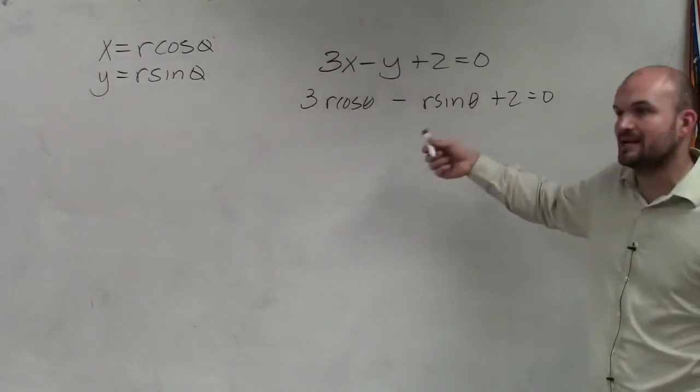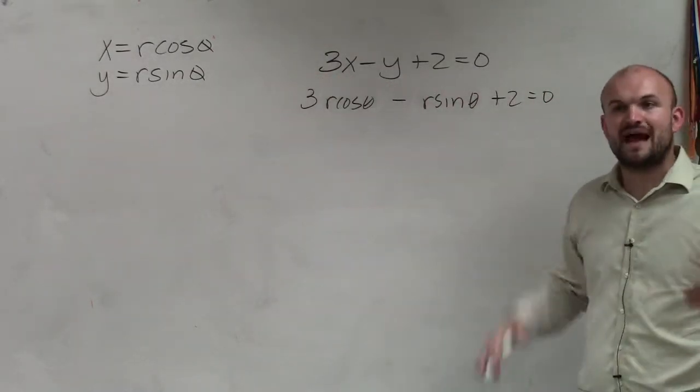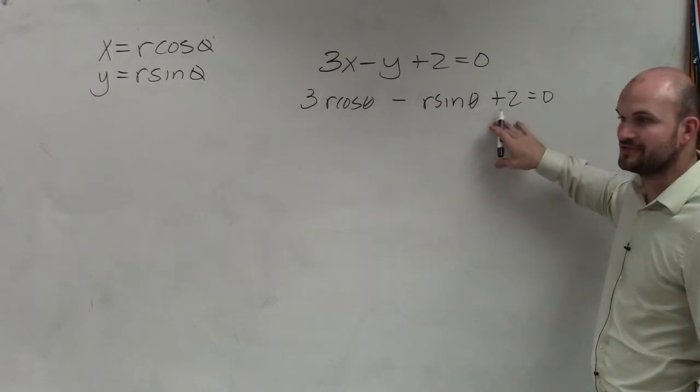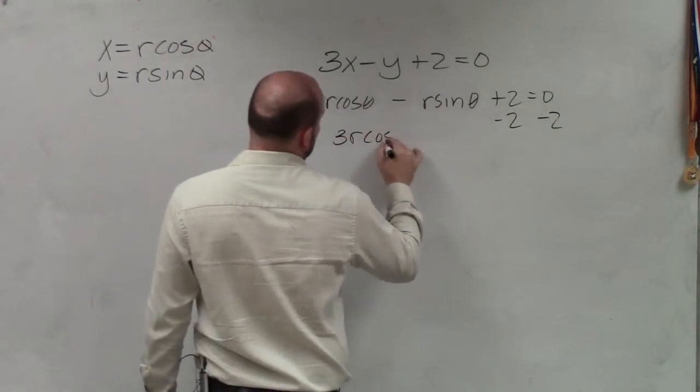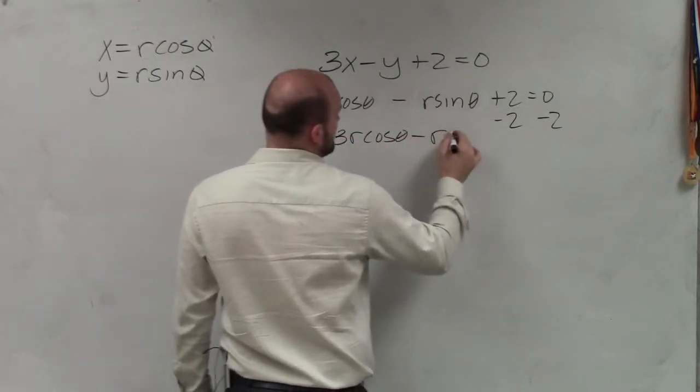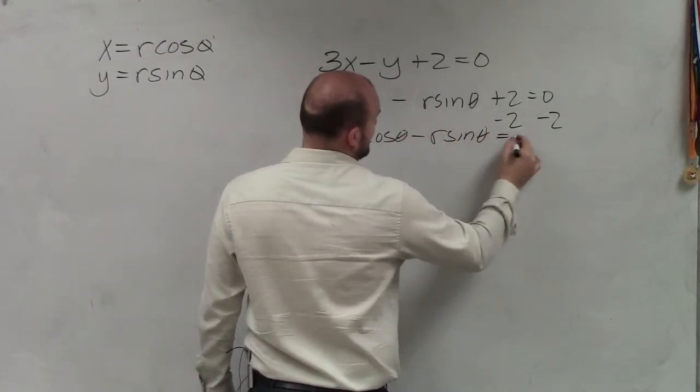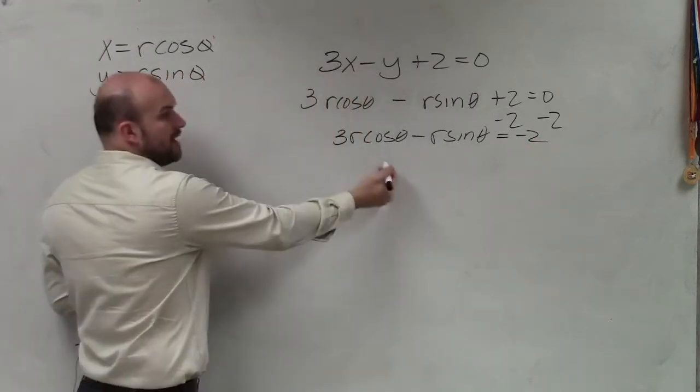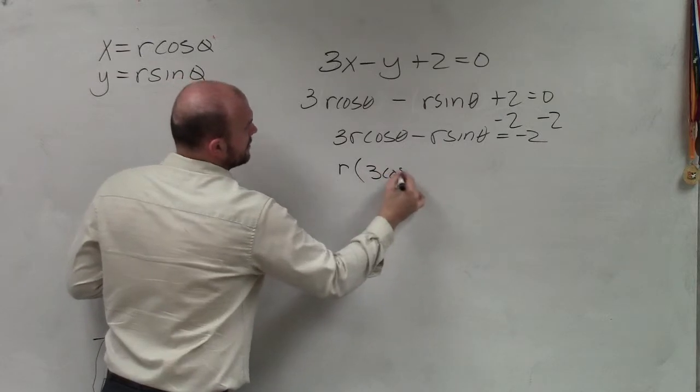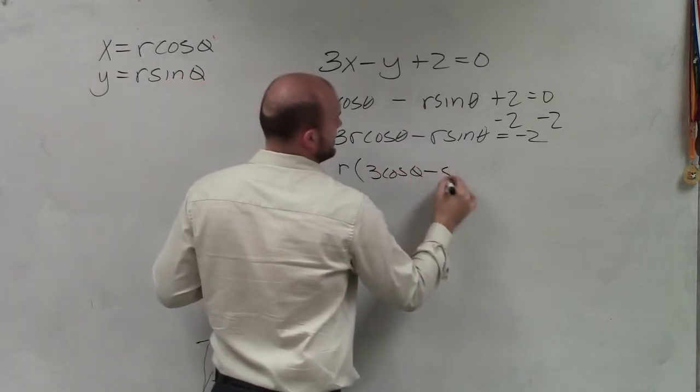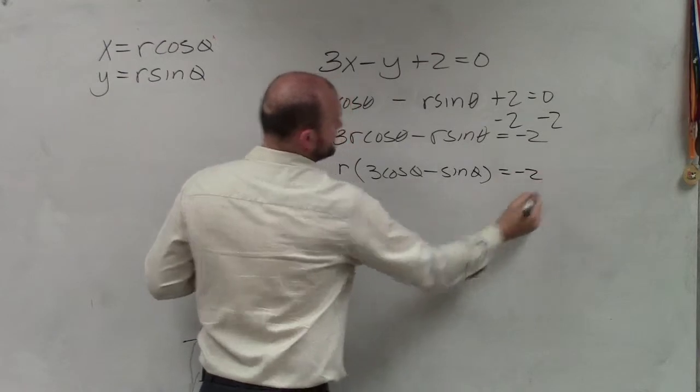One thing I want to do is get the r's together, so I'm going to factor out the r. The problem is I have a 2 over here, so I'm going to put the 2 on the other side. So I have 3r cosine of theta minus r sine of theta equals negative 2. Now I can factor out an r, and I'm left with 3 cosine of theta minus sine of theta equals negative 2.